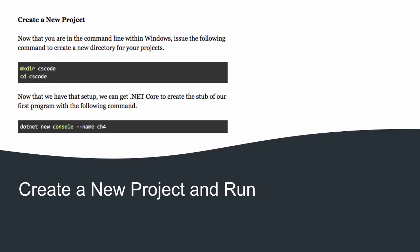Once you've done that, you're going to create a new project. First, you're going to create a new directory called CS Code using the mkdir command, then change to that directory. Then you'll fire off the command for .NET Core to create the shell of a new console program — that's the command dotnet new console --name, and in our case we're going to call it CH4 for chapter four.